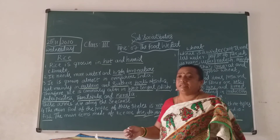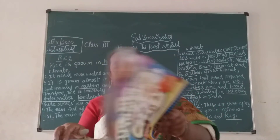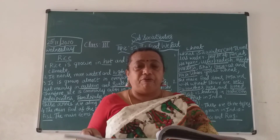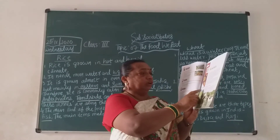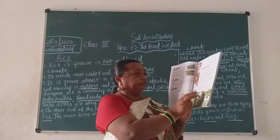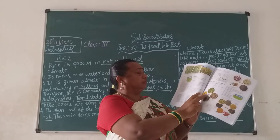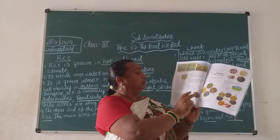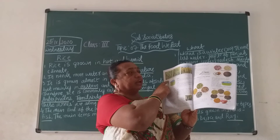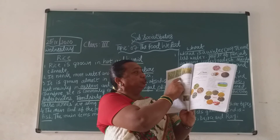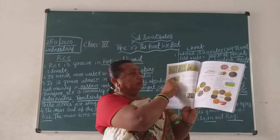Take out your readers, children. Read the lesson: The food we eat. Last class we talked about food crops of India. Now look at this picture. What is this? Wheat, Ragi, Jowar, Bajra.